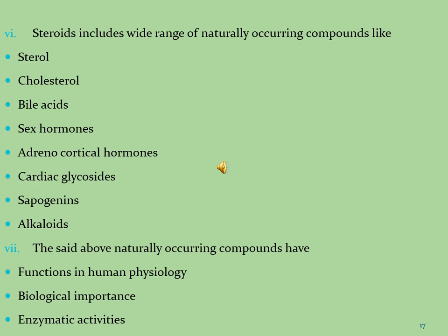Sometimes the steroid molecule is linked with other substituents. If the steroid molecule is linked with alkaloids, we call that molecule a steroid alkaloid. Similarly, if the steroid molecule is linked with sapogenins, we call it a steroidal sapogenin. These naturally occurring compounds have functions in human physiology, biological importance, as well as enzymatic activities.